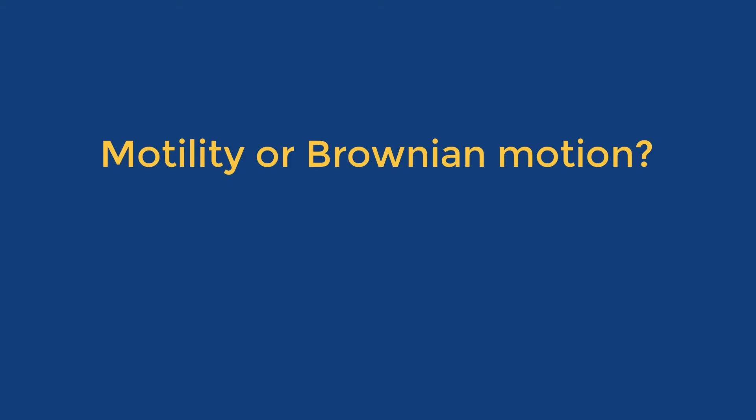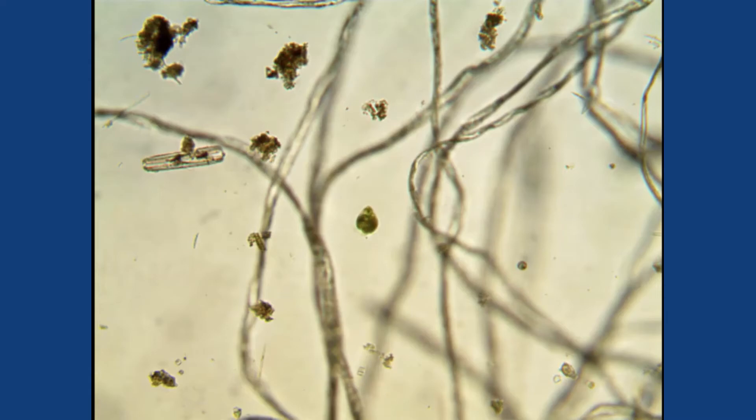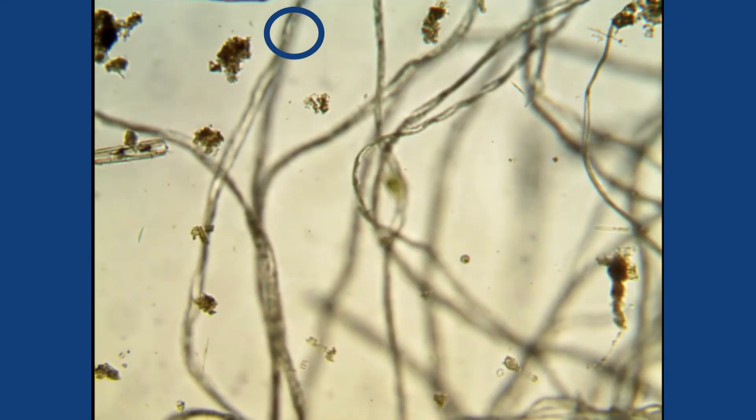The question is whether any movement you see is through motility or Brownian motion. Brownian motion is the random movement of particles or organisms in response to environmental stimuli such as wind or in this case water and air flow underneath the coverslip.